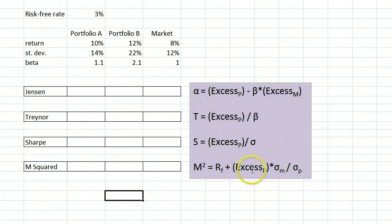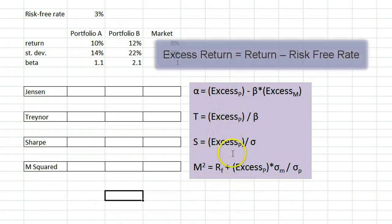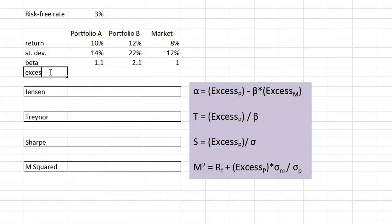The formulas that you see here may be expressed differently than in your text, but they are in fact the same formulas. In particular, we will be thinking of the equations in terms of excess return, which is an investment's return in excess of the risk-free rate. I would suggest making a new row for these values.